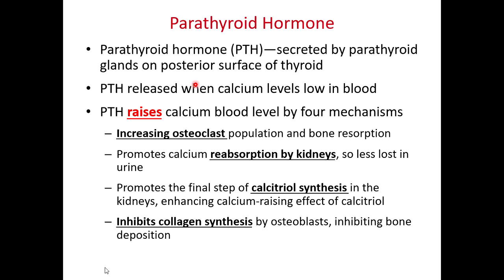Our last hormone is parathyroid hormone (PTH), secreted by the parathyroid glands located on the posterior medial surface of the thyroid, partially embedded within it. Parathyroid hormone is released when calcium levels are low in the blood. As a negative feedback loop, parathyroid hormone will raise calcium levels — another mechanism, in addition to calcitriol, for increasing blood calcium.